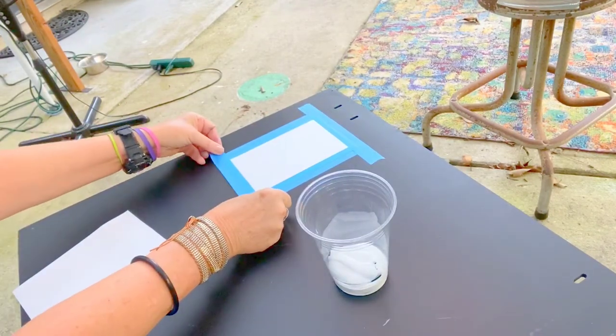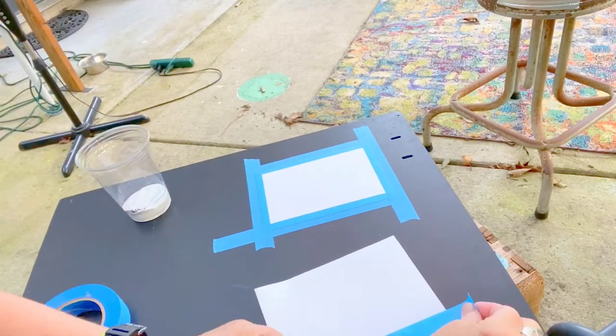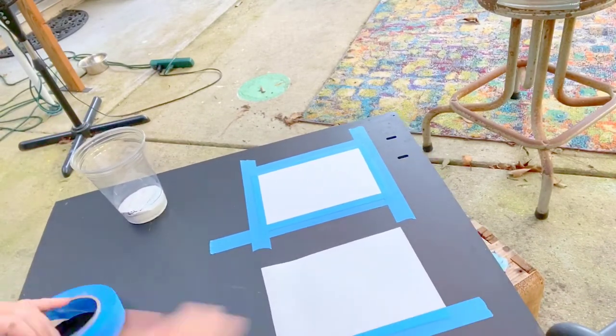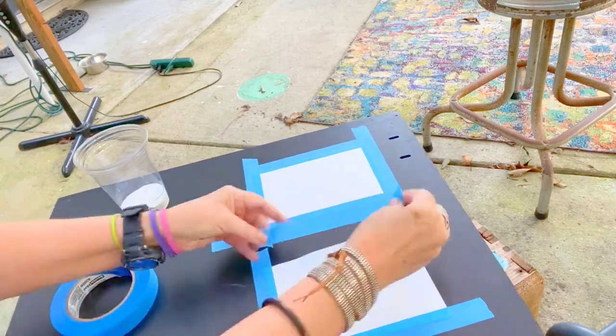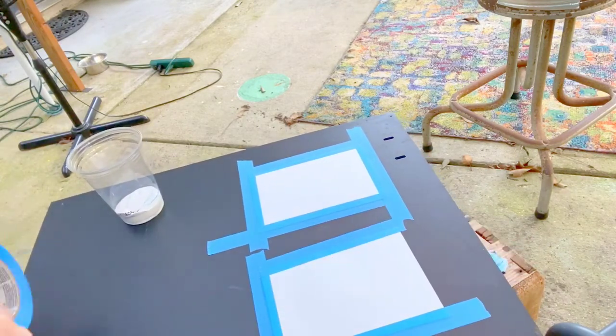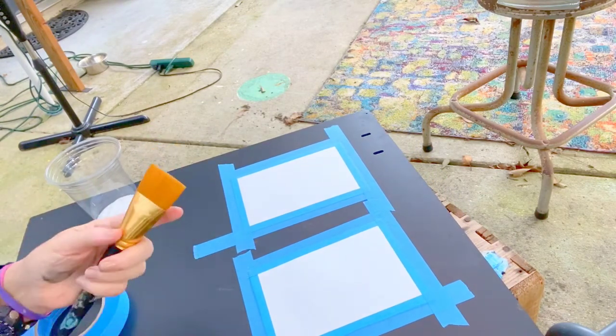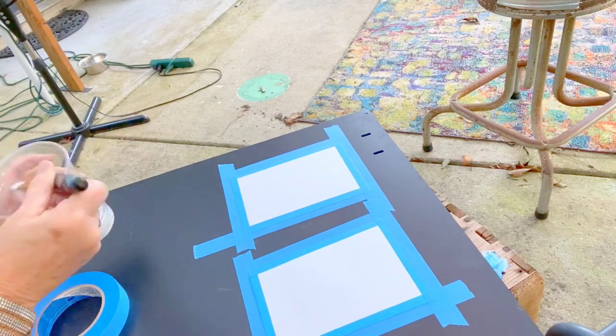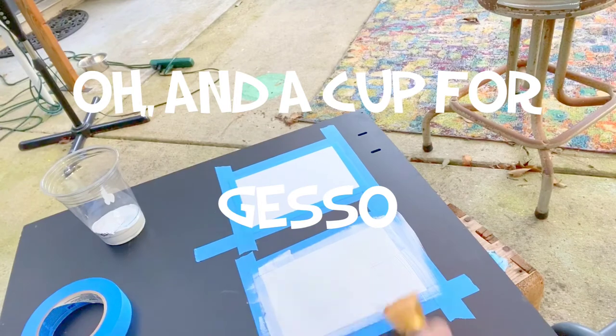The blackboard in the video is nothing special but left over from another project. You may already have a drawing board if you took a drawing class or you can purchase one. It can also be just a piece of plywood that would be perfectly acceptable.